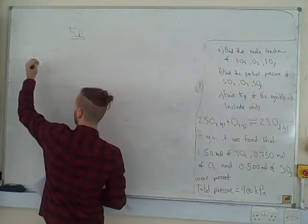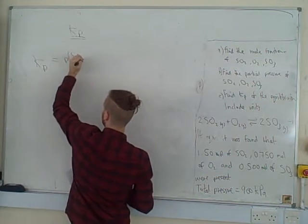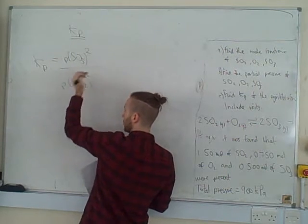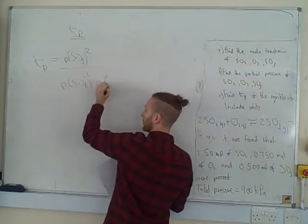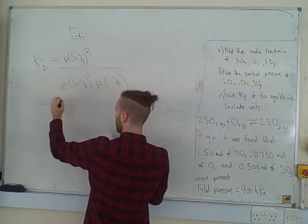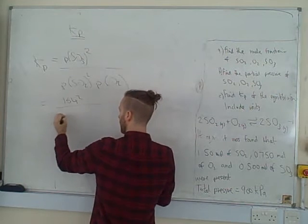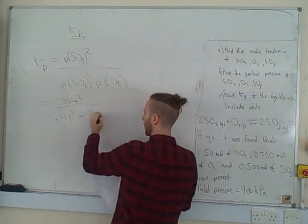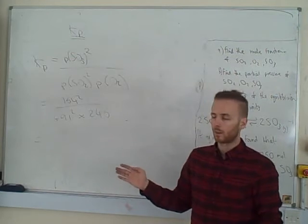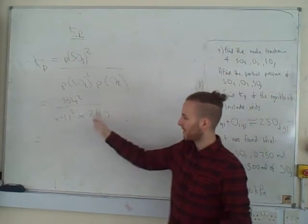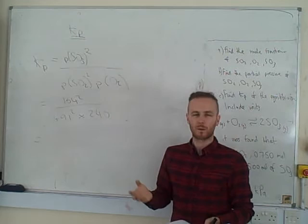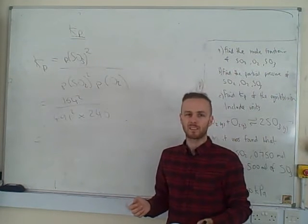KP equals the partial pressure of SO₃ raised to the power 2, divided by the partial pressure of SO₂ raised to the power 2, multiplied by the partial pressure of O₂. Feeding in numbers: KP = 164² ÷ (491² × 246). Use your calculator carefully — if you're not confident, work it out in steps: calculate 164², write it down, calculate 491², write it down, then divide.